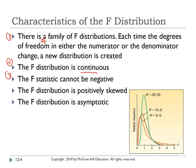Third, the F statistic cannot be negative. If you look at the diagram, the value starts from zero and will keep going until positive infinity. In other words, number four, the F distribution is positively skewed. And the last characteristic of the F distribution is that it is asymptotic — as the F value increases, the distribution will approach the x-axis but will never touch it.